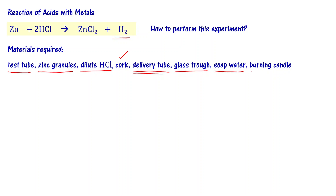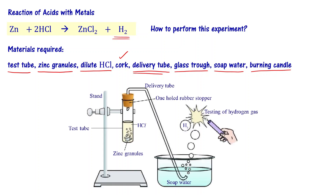We also need a burning candle. We set up the experimental apparatus: a test tube with a cork fitted to it, and from the hole in the cork we fit the delivery tube. We fill soap water in the glass trough and make sure the delivery tube ends in the soap water.